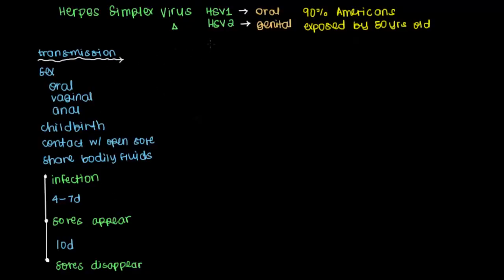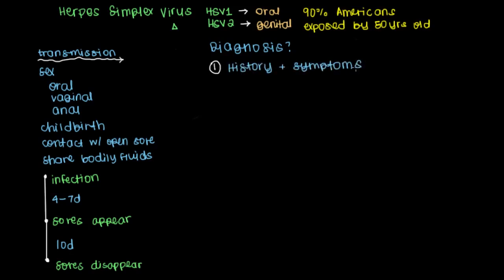We've talked quite a bit about herpes already. The next step would be to understand how we diagnose herpes. Well, commonly, physicians will ask the patient about their medical history, recent sexual practices, and other things that may suggest a mode of transmission or some way the patient could have already been infected with herpes. Combined with this history and the symptoms they may be exhibiting — such as a cold sore on their lips, called herpes labialis, or if it's on their genitals, herpes genitalis — that's usually enough to make the diagnosis.